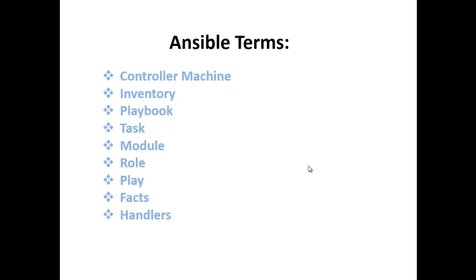Ansible has a multitude of built-in modules but you can also create custom ones. Role: a predefined way for organizing playbooks and other files in order to facilitate sharing and reusing portions of a provisioning. Play: a provisioning executed from start to finish is called a play — in simple words, execution of a playbook is called a play. Facts: global variables containing information about the system, like network interfaces or operating system.